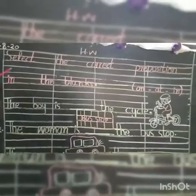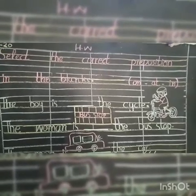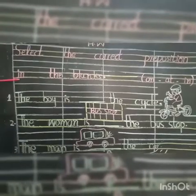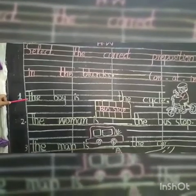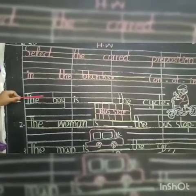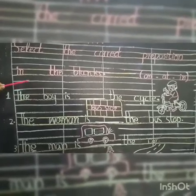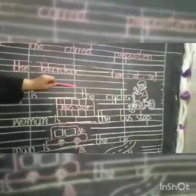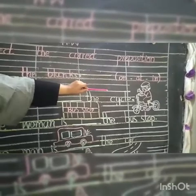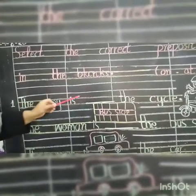Right on the bracket. Now write on the first line. The boy is — why can't we say 'on cycle'? Cycle is on top. 'On' means on top. So what we write here? On. The boy is on the cycle.